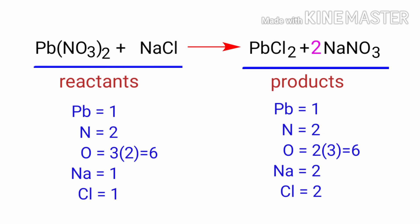The nitrogen and oxygen atoms are balanced. Now we need to balance the sodium and chlorine atoms. To do this we need to put a coefficient of 2 in front of NaCl.